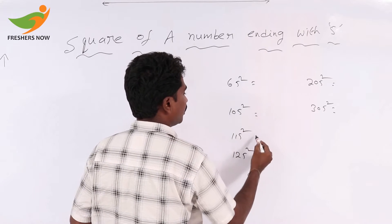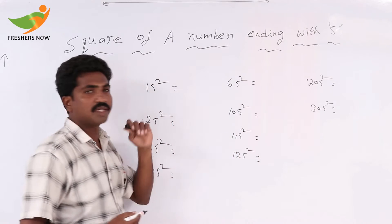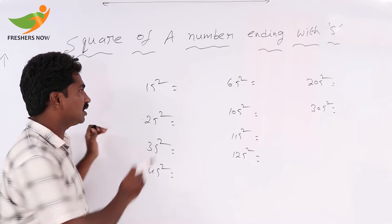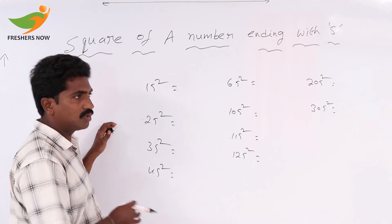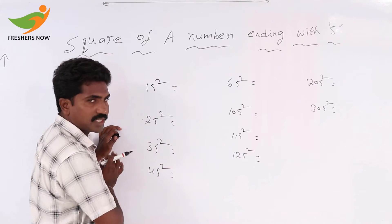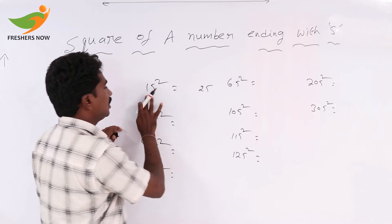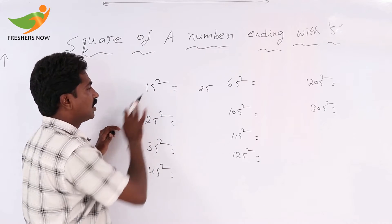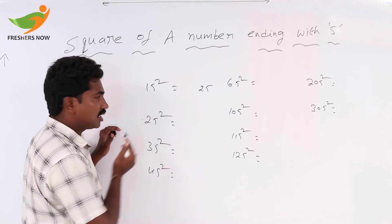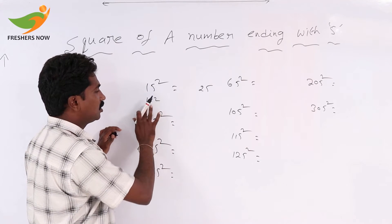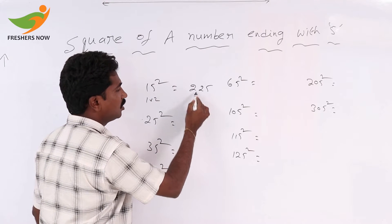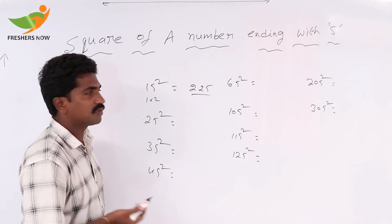First I am taking 15 square. This is a number where the unit place value is 5. The condition is: 5 square equals 25. The tens digit is 1. The next number after 1 is 2, so 1 into 2 equals 2. So 15 squared equals 225.